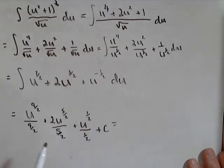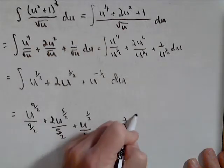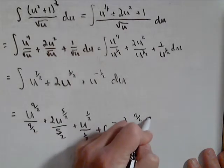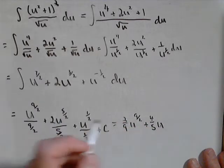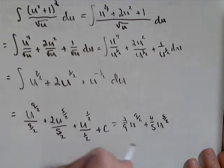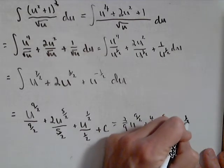So we got two more steps. We're going to simplify and then we'll substitute back. So multiply by the reciprocal. We have two ninths u to the nine halves. When we flip and multiply, we get four fifths. So plus four fifths u to the five halves, and then two u to the one half plus c.